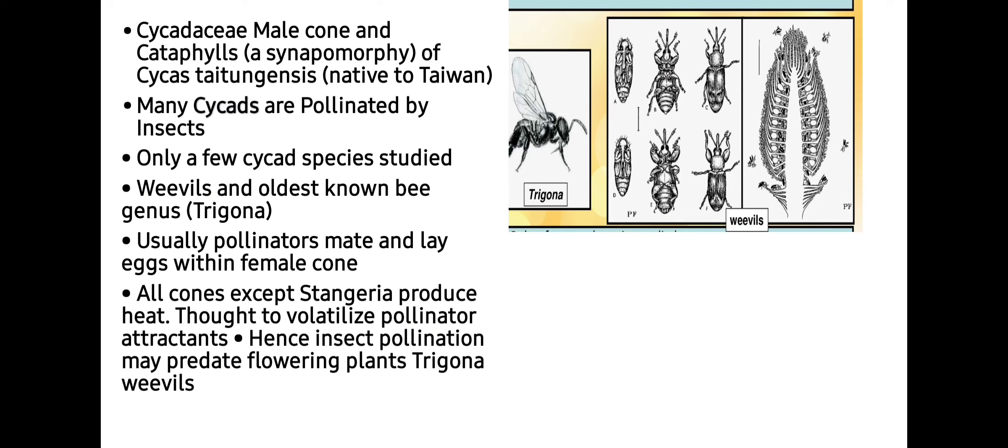Cycadaceae male cones and cataphylls show synapomorphy, meaning they show ancestral characters. Cataphylls are leaves and the male cones are modified leaves bearing microspores. This synapomorphy is present in Cycas titunensis, which is native to Taiwan. Many cycads are pollinated by insects. The oldest known bee genus Trigona is responsible for insect pollination. Usually pollinators mate and lay eggs within the female cone. All cones except Stangeria produce heat, thought to volatilize pollinator attractants. Hence insect pollination may predate flowering plants.